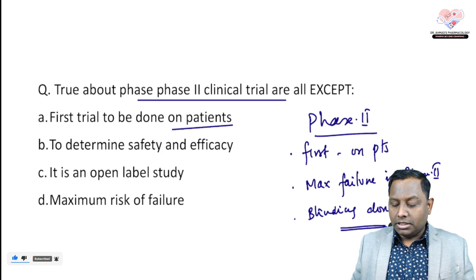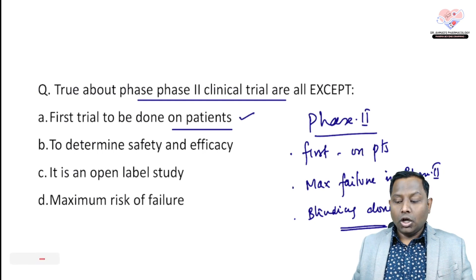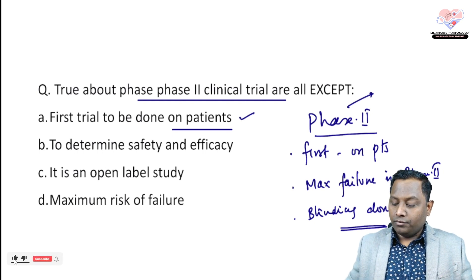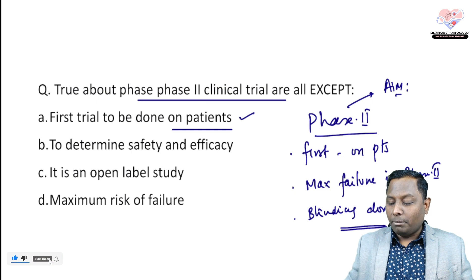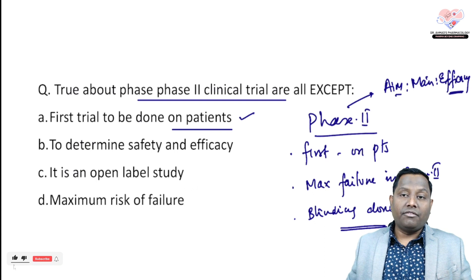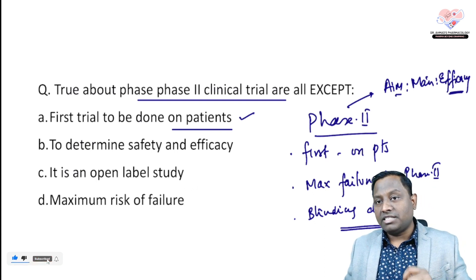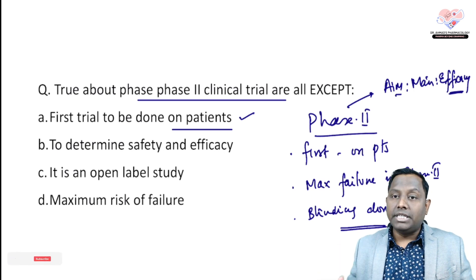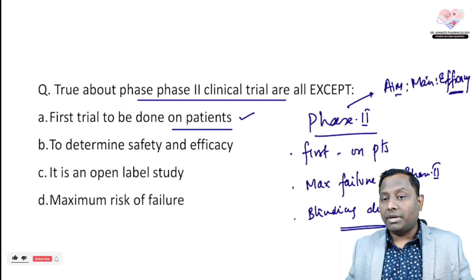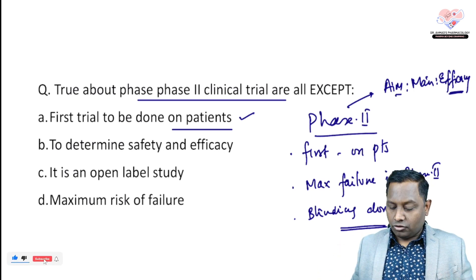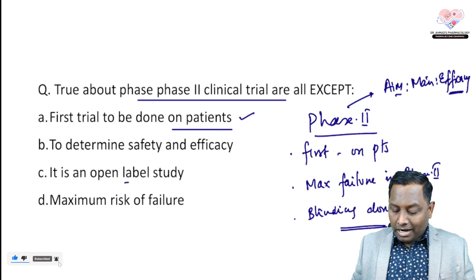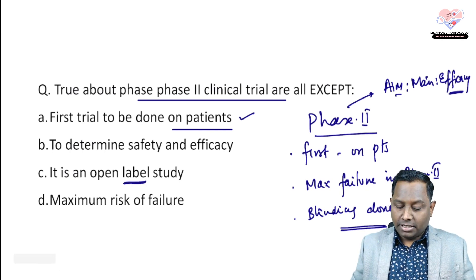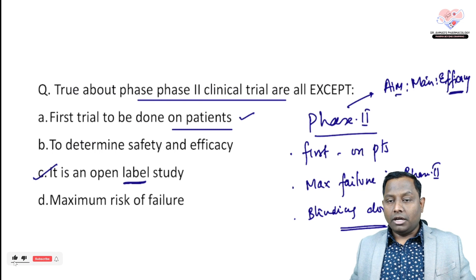The main aim of Phase 2 is efficacy. Phase 1's main aim is safety, but safety analysis can also be done in Phase 2. It is not an open-label study — blinding is done here. So option C will be the correct answer.